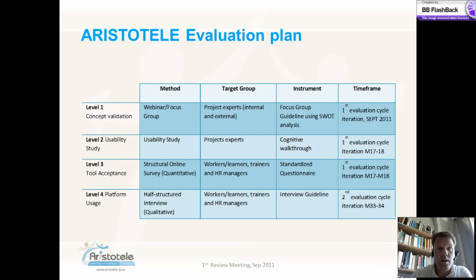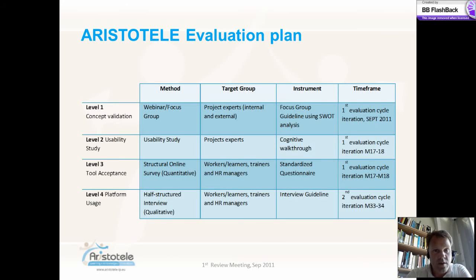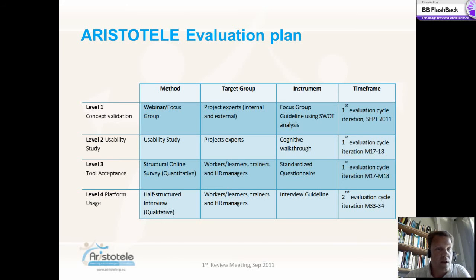The Aristotle evaluation plan foresees four levels: concept validation, usability study, tool acceptance and platform usage. Each defined method focuses on a defined target group, has a structured instrument presented in deliverable 9.1, and has a defined time frame. We are working with a multitude of evaluation methodologies coming from different disciplines, being in parts quantitative and in parts qualitative.